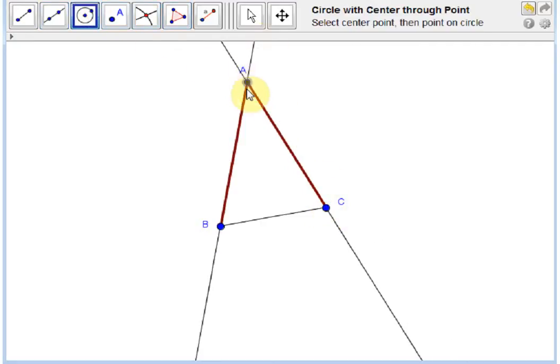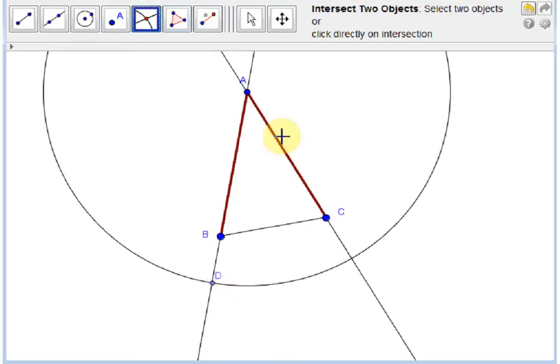Then I'll draw a circle with center A, and whose radius is an arbitrary point on this line AB. I'll call that point D. This circle, center A, also intersects line AC. I'll mark that point of intersection and call it E.